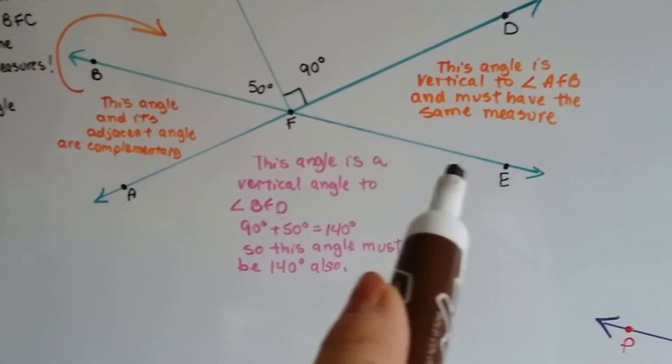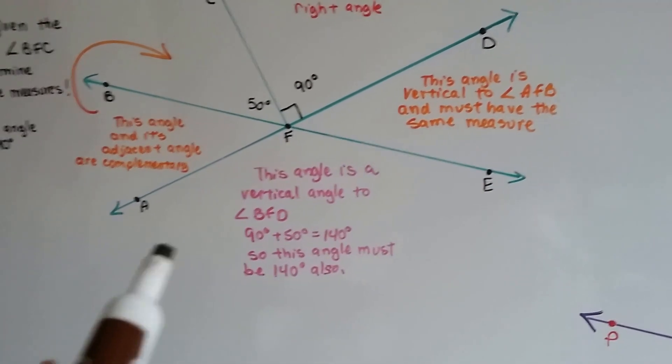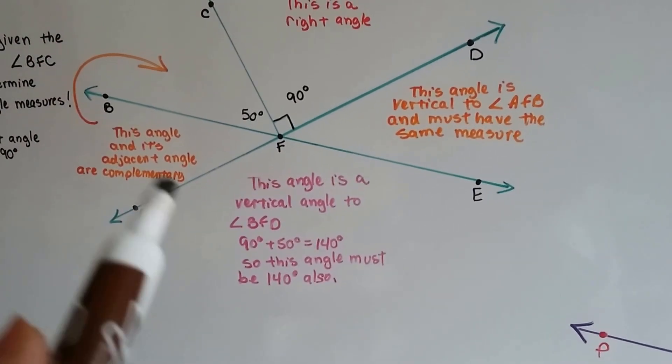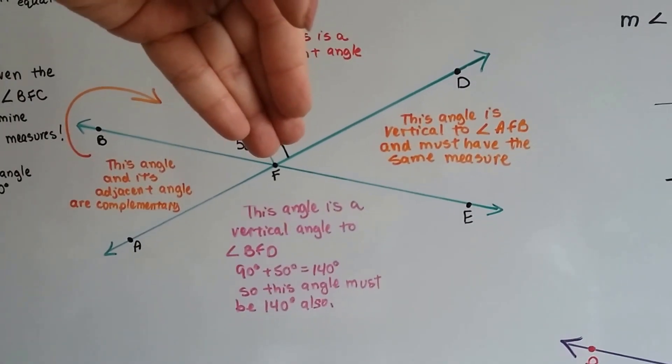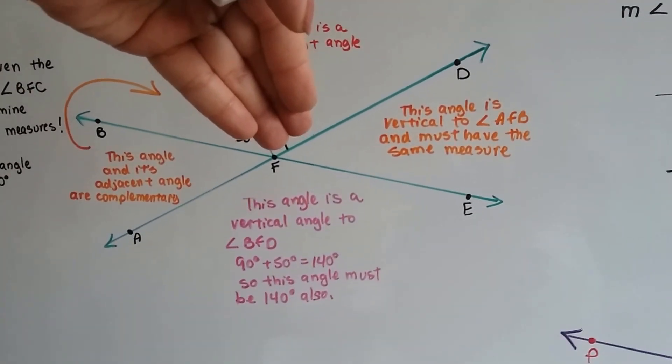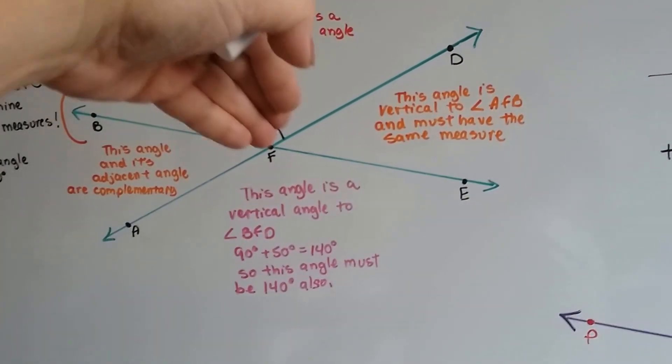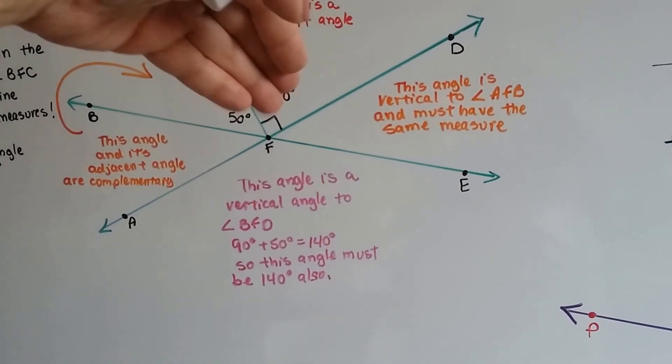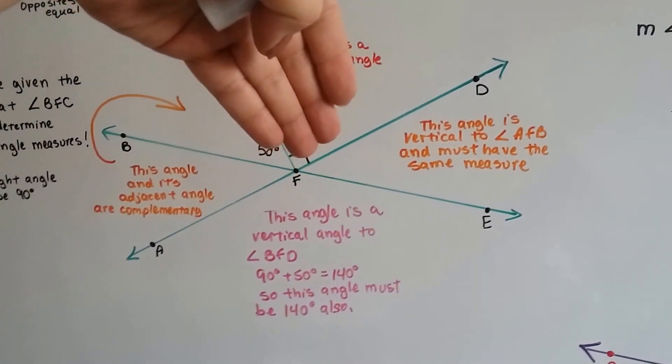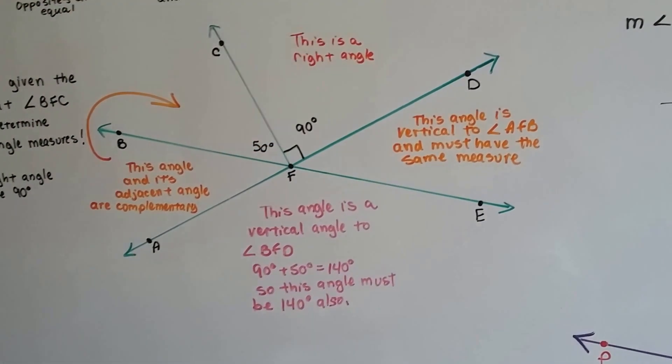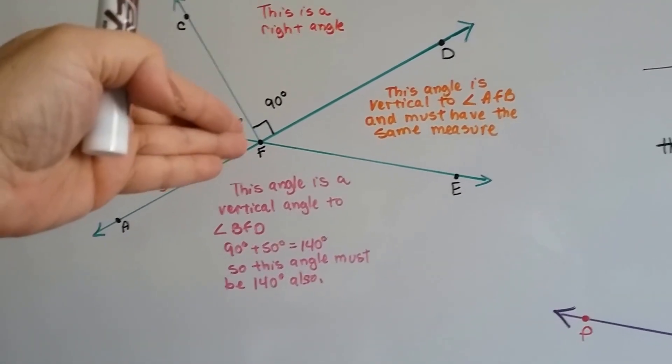And then we have angle AFE, and we could say EFA. It doesn't matter. But this angle is a vertical angle to BFD. So if we ignore that line, we can see that these two angles are the same, and they're vertical to each other. Whatever this entire measure is right here, and we ignore this line, it's going to equal this measure down here. And we can do that. We can ignore a line when we're measuring angles. We can ignore this line and figure out what this entire measure is of these two angles together.